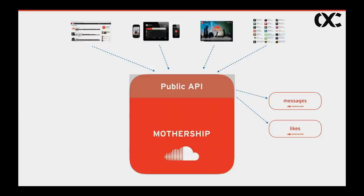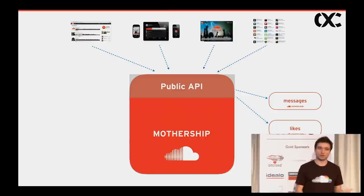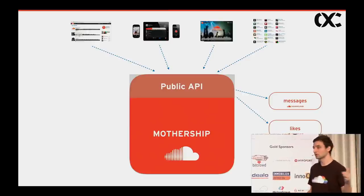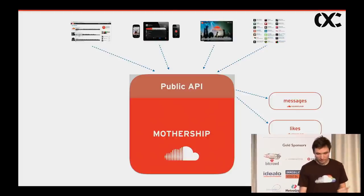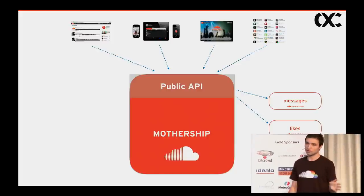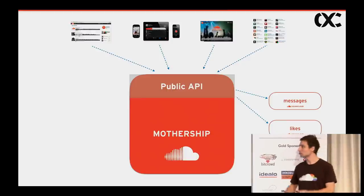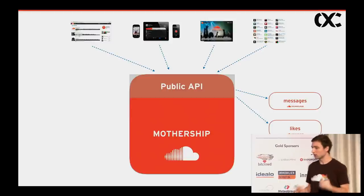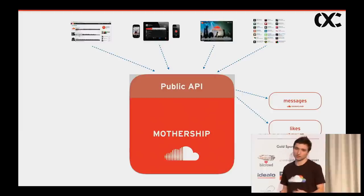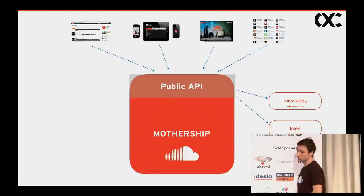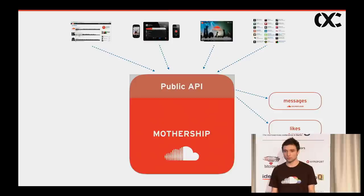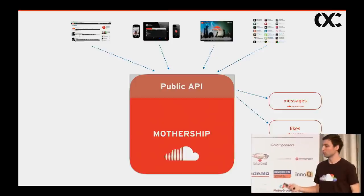I'll mention two reasons. First, whenever you need to add a new microservice, you have to touch the Mothership codebase, change it, implement your integration and deploy it — which we didn't want to do. Second, we wanted to move away from using our own public API from our own clients like iOS and Android. The public API is a one-size-fits-all solution that works well for third-party apps, but for our own clients we know their specific requirements and can create APIs tailored to those. Using the public API meant trade-offs on user experience.